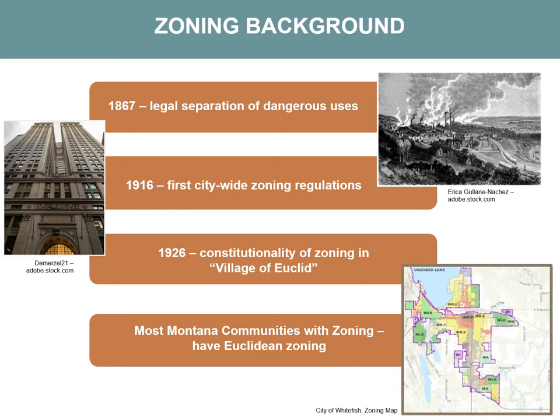Form-based code is a relatively new type of zoning. Before discussing what it is, it's helpful to understand why it came about in the overall context of zoning history. The earliest modern application of zoning was in 1867 in San Francisco, to separate dangerous, odiferous, or unsightly uses — like tar boiling and dead carcass cremation — from other uses like residential. Both residences and these businesses had a right to exist, but not necessarily in close proximity. The legal separation of land uses began, creating the foundation for zoning.